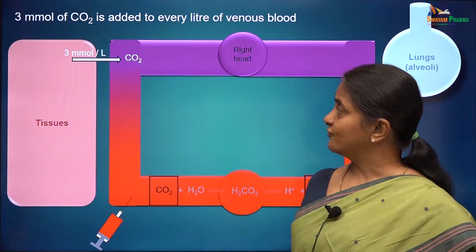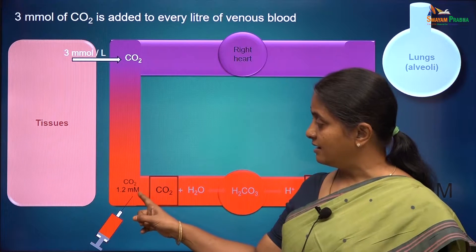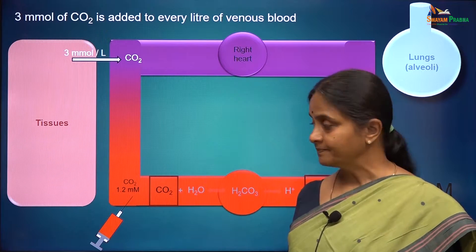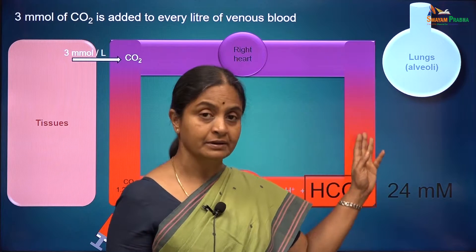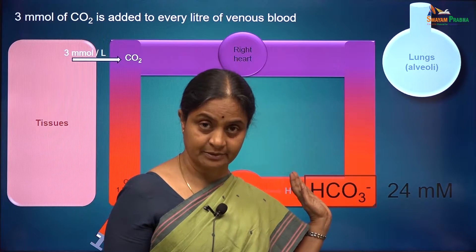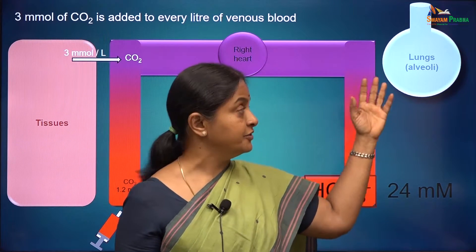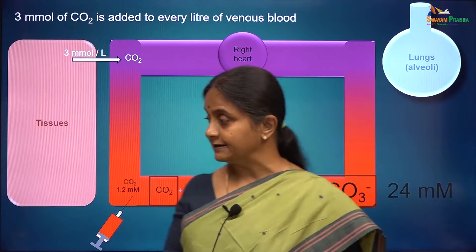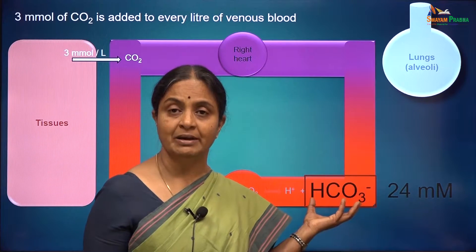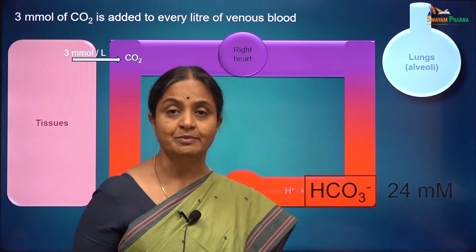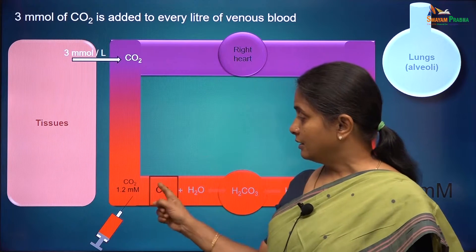When 3 millimoles per litre of carbon dioxide is added, what happens to the carbon dioxide concentration of venous blood? In arterial blood it was 1.2 millimoles per litre. In fact, the respiratory centre in the brain regulates ventilation so as to maintain a carbon dioxide concentration in arterial blood that would exactly balance whatever bicarbonate concentration there is, so as to maintain the ratio of bicarbonate to carbon dioxide at 20.